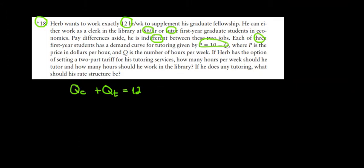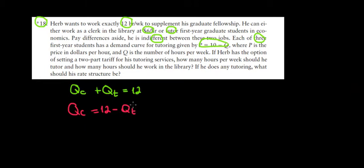We want a function of QC depending on QT. We do this because later we will substitute everything in terms of one variable and maximize with respect to that one variable — since we want to optimize our working time, we'll use derivatives.